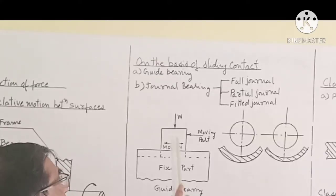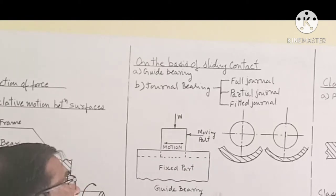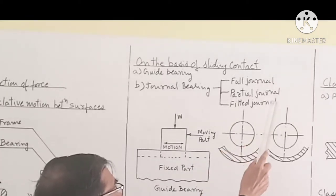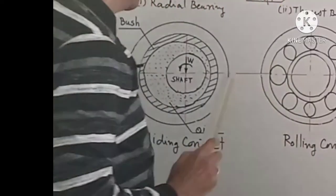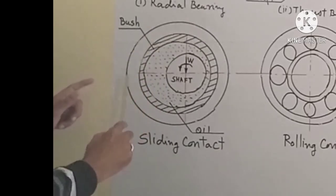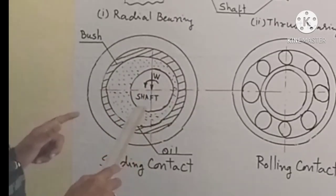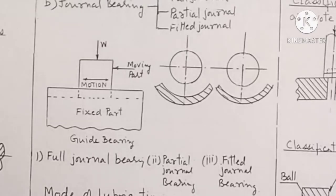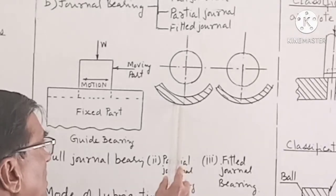Journal bearing is classified into full journal bearing, partial journal bearing, and fitted journal bearing. This is the figure of full journal bearing, and this is the figure of partial journal bearing.